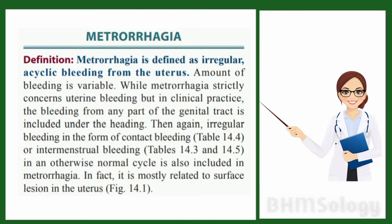Metrorrhagia is irregular, acyclic bleeding from the uterus. The amount of bleeding is variable. While metrorrhagia strictly concerns uterine bleeding, in clinical practice the bleeding from any part of the genital tract is included under this heading.